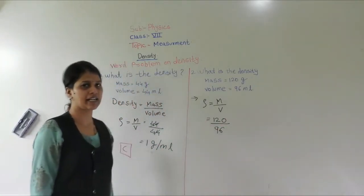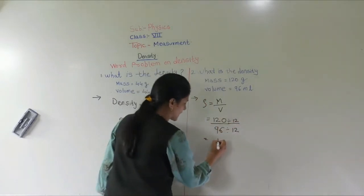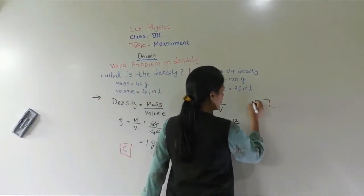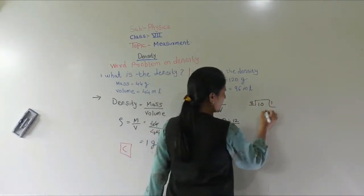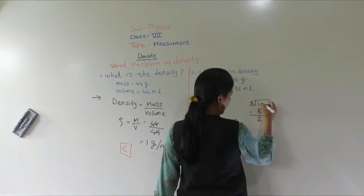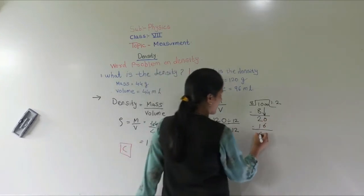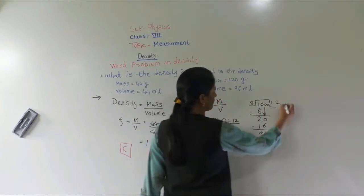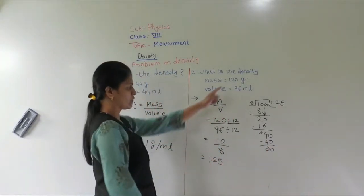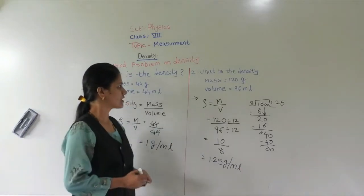Both 120 and 96 are divisible by 12, giving 10 and 8 respectively. Now dividing 10 by 8: 8 goes into 10 once, remainder 2. Adding a decimal, 20 divided by 8 is 2 remainder 4, then 40 divided by 8 is 5. So the answer is 1.25 gram per ml.